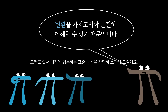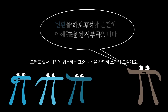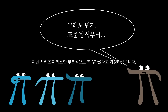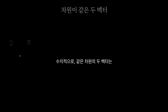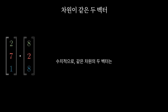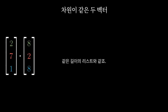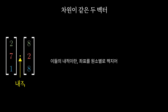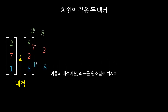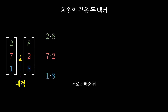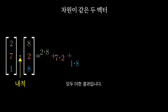Before that though, let me just briefly cover the standard way that dot products are introduced, which I'm assuming is at least partially review for a number of viewers. Numerically, if you have two vectors of the same dimension — two lists of numbers with the same lengths — taking their dot product means pairing up all of the coordinates, multiplying those pairs together, and adding the result.